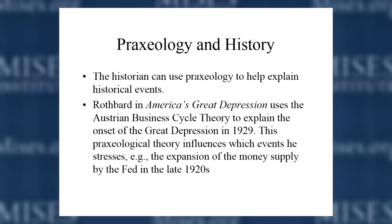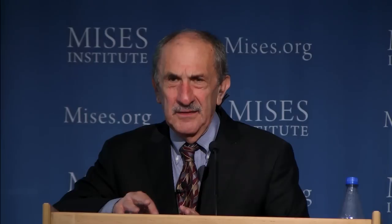In Austrian business cycle theory, the key point is that there's an expansion of bank credit that drives the loan rate of interest below the rate determined by people's time preference. As a result, there is malinvestment that, when it can't be sustained, causes businesses that were invested in because of the credit expansion to collapse. The depression is then the process of readjusting the economy to the actual rate of time preference.